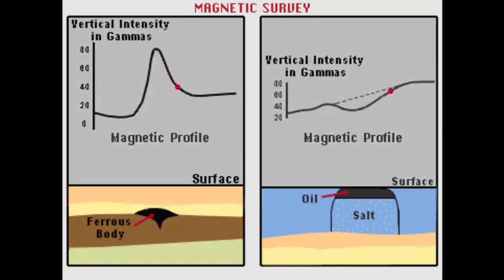Since most of the magnetic materials are contained in igneous or metamorphic rocks, the relative strength and sharpness of magnetic anomalies is controlled by the depth of occurrence of these rocks. Since these rocks usually constitute basement, the depth below the surface can be interpreted as the depth of the sediments in the basin.